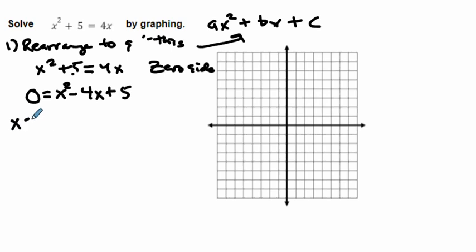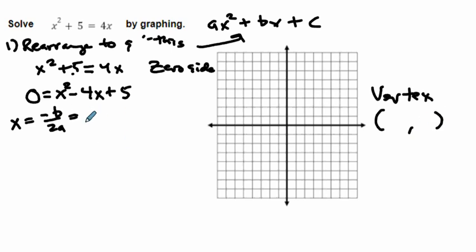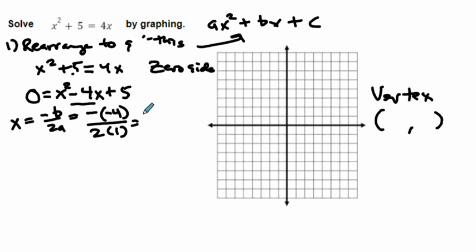Now I can use x equals negative B over 2a to find the x-coordinate of my vertex. I go negative, then take my B which is negative 4. Two negatives make a positive, so that's 4 over 2 times 1, which gives me 4 over 2 equals 2. So the x-coordinate of my vertex is 2.